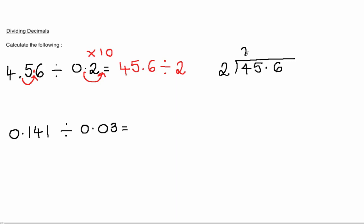2 divided into 4 is 2. 2 divided into 5 is 2 remainder 1. Remember to place the decimal point in. And then, 2 divided into 16 is 8. So our final answer is 22.8.